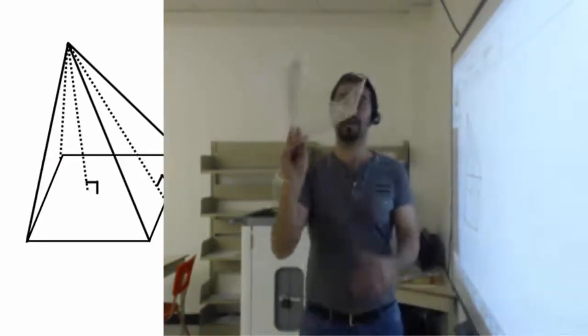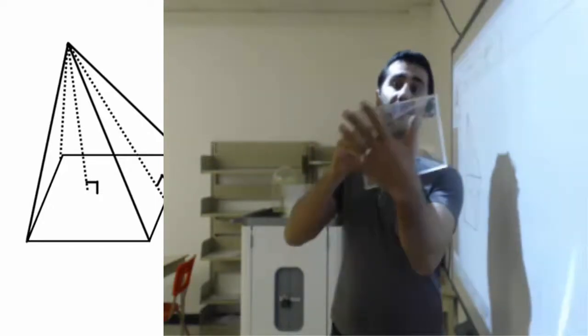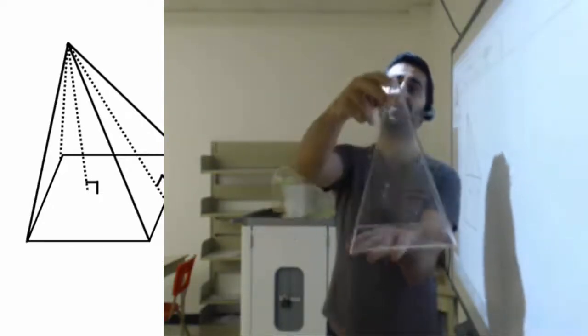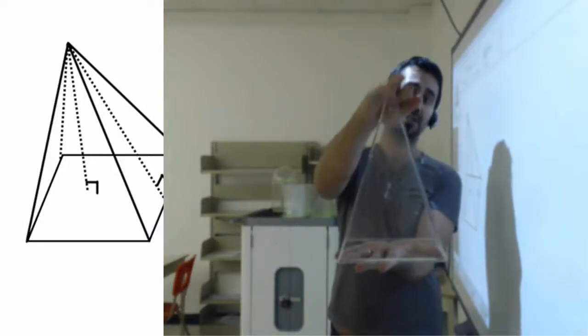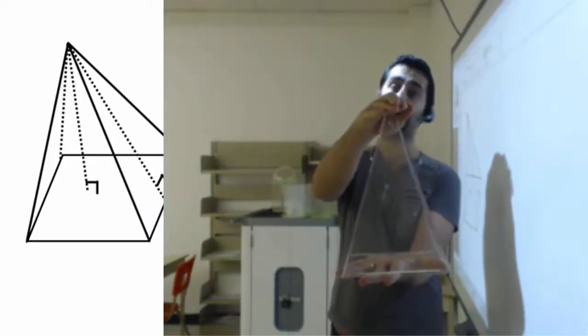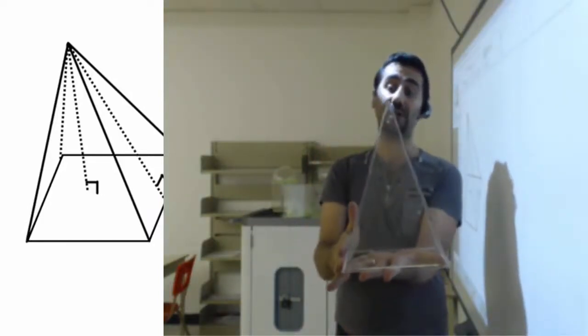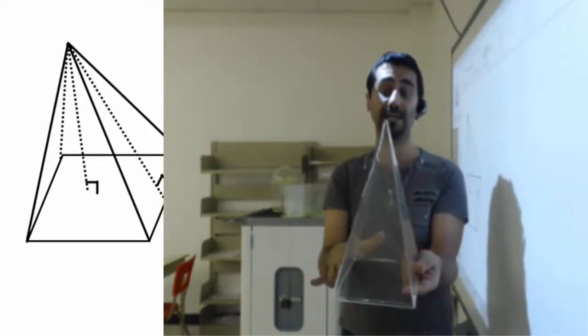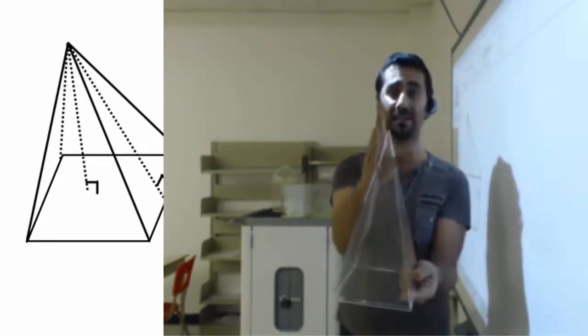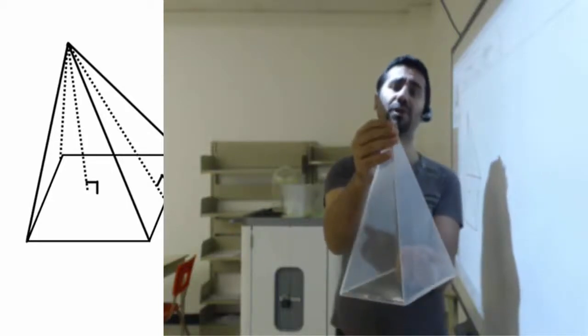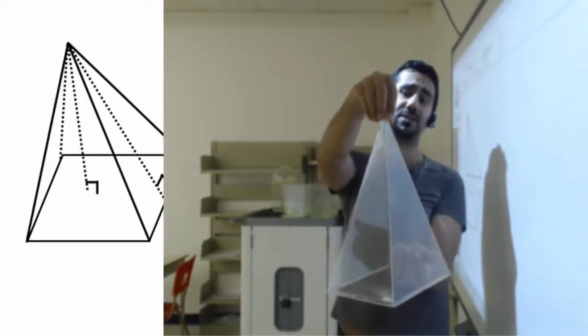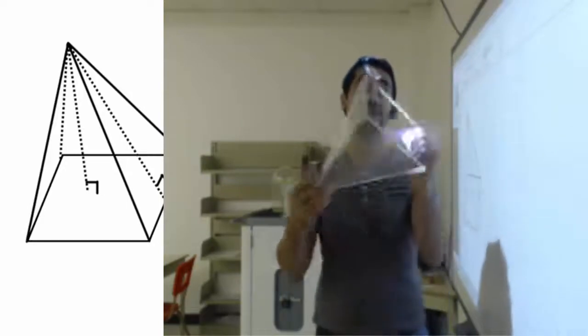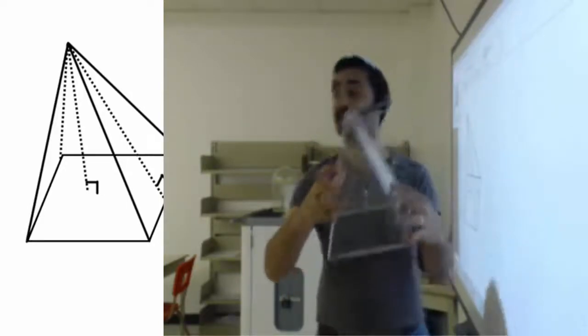And a pyramid. So this is a rectangle. We have the base in the rectangle and we do not have the rectangle on the top. So all the sides, they do not go up with 90 degrees. They have some angles here and they all come together at the end here with the tip. Therefore, this is a pyramid.